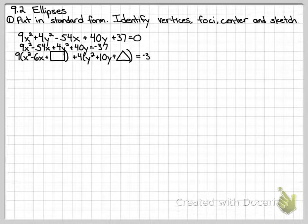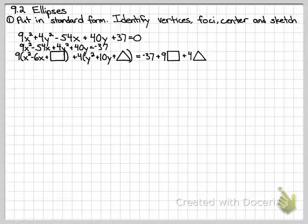And remember, it equaled negative 37 before. But I've added some stuff. I added a rectangle, an empty square, and it's inside a parenthesis with a 9. So technically, I added 9 squared to the left, so I need to add 9 squared to the right to keep it balanced. Same thing with a triangle. I added 4 triangle to the left, so I need to add 4 triangle to the right to keep it balanced.